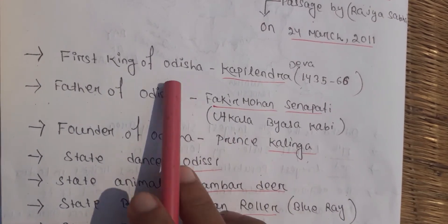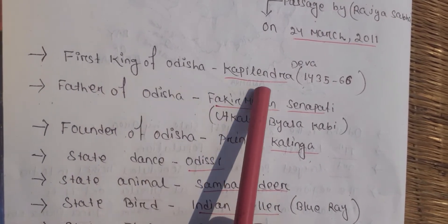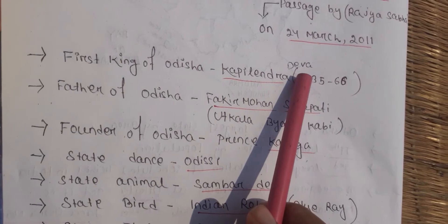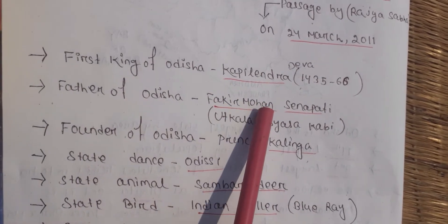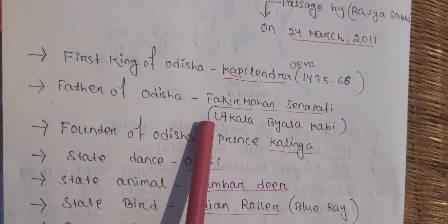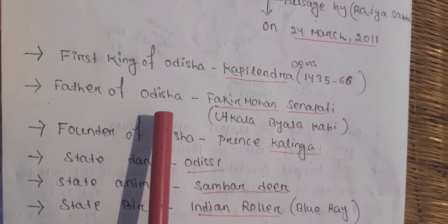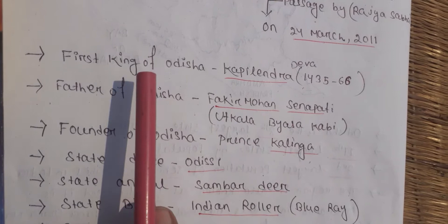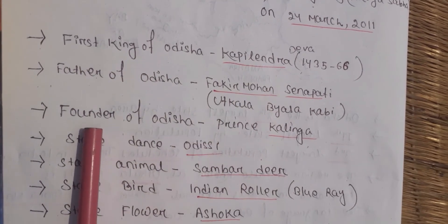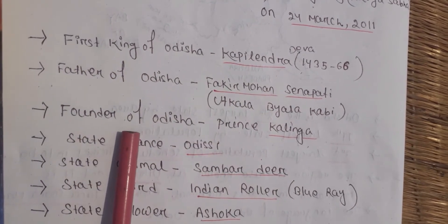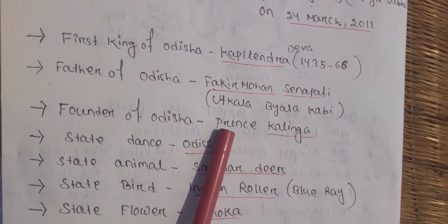The first king of Odisha was Kapilendradev. The Father of Odisha is Fakir Mohan Senapati, also known as 'Vyasa Kabi.' The founder of Odisha is Prince Kalinga.